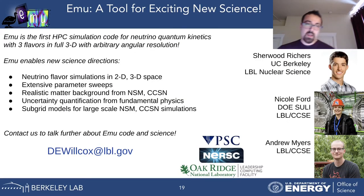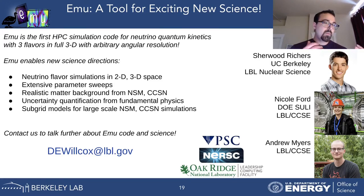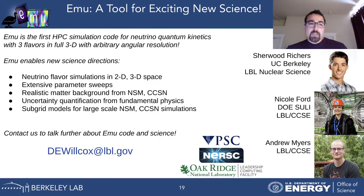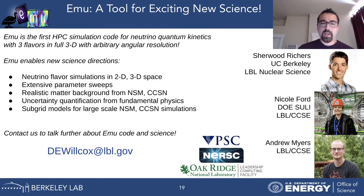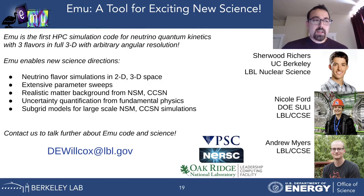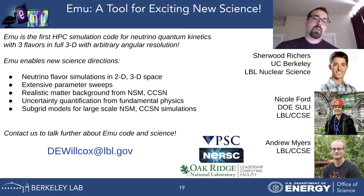We have developed a particle-in-cell method, implemented it in the code EMU, and made it a tool for exciting new neutrino science. EMU is the first HPC simulation code for neutrino quantum kinetics with three flavors in full three dimensions with arbitrary angular resolution. New science directions now open to us include: flavor simulations in 2D and 3D space, parameter sweeps, introduction of realistic matter backgrounds from neutron star mergers and core-collapse supernovae, quantifying fundamental physics uncertainties in the fast flavor instability, and ultimately developing subgrid-scale models for incorporation into large-scale neutron star merger and core-collapse supernova simulations.